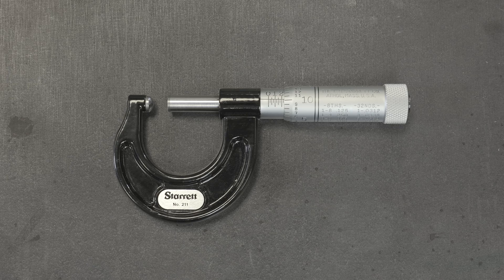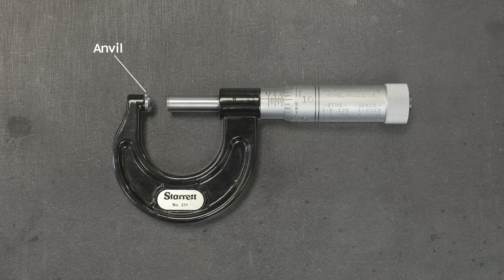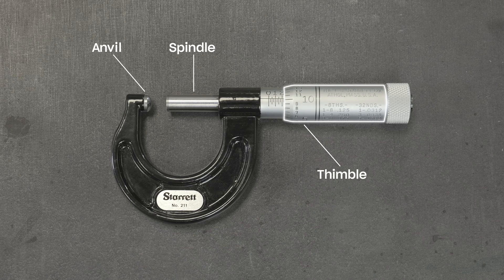The three basic components of a micrometer you need to remember are the anvil, which is the stationary end, the spindle, which is a little shaft that extends out, and the thimble, which is the part you turn.